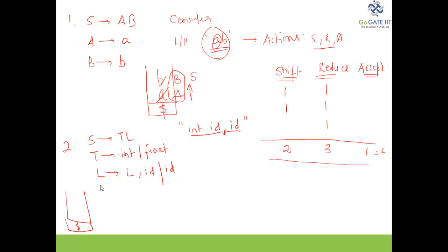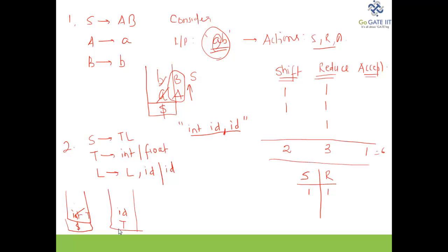We shift 'int' first — one shift action. Then 'int' can be reduced to T — one reduce action. Next we push ID — one more shift action. ID can be reduced to L — one more reduce action. So we now have T and L on the stack with two shift and two reduce actions.